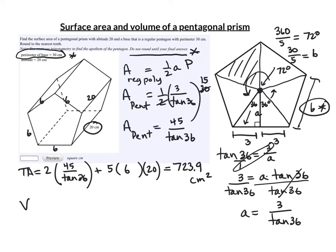The volume is the area of the base, which was 45 divided by the tangent of 36. Area of the base times the height of the prism, or the altitude of the prism. And the altitude is the distance between the two pentagons. That's the 20. So we'll take 45 times 20 and divide it by the tangent of 36. And I get 1238.7. And this is volume, it's measured in cubes. So it's centimeters cubed, or cubic centimeters.